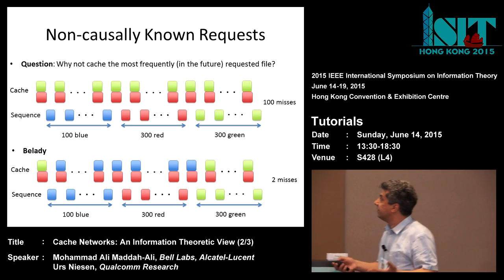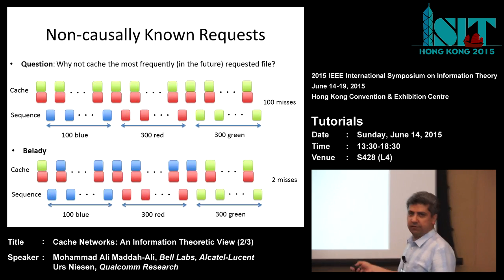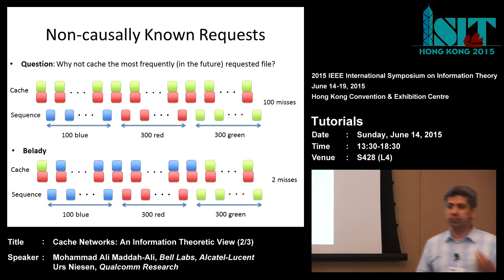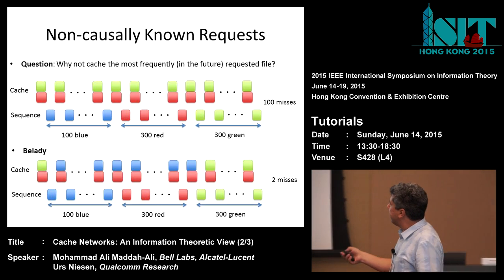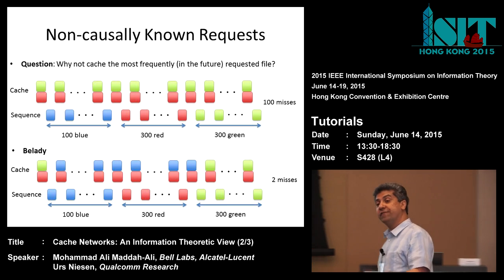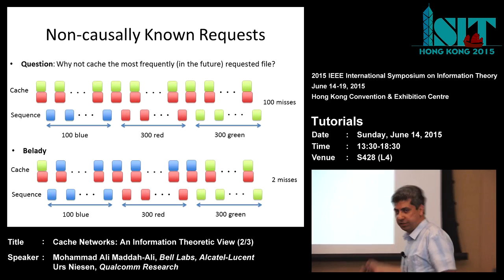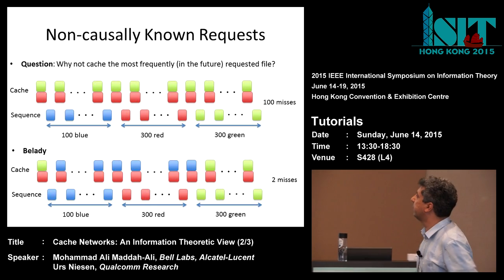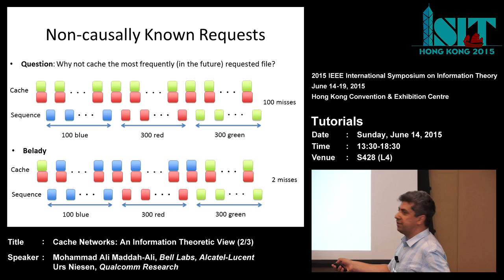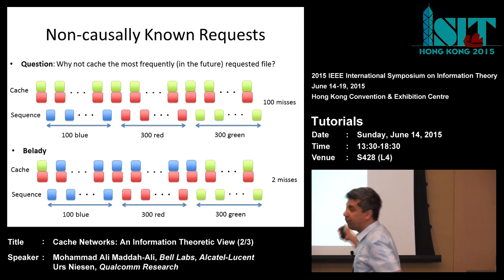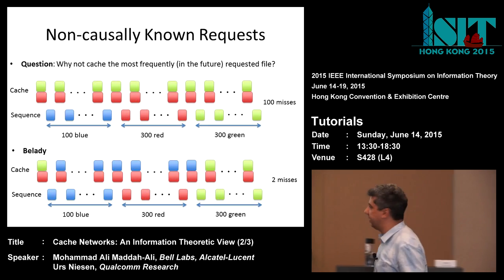Why shouldn't we cache the most frequent file in the future? Assume the sequence of requests are like this: first 100 blue requests, then 300 red, then 300 green. Based on the idea of caching the most frequent files, we should cache the green and red files, since each has 300 requests while blue only has 100. Then how many misses do we have? We have one miss per blue request, giving us 100 misses total. If you scale this problem, the number of misses can be unbounded.